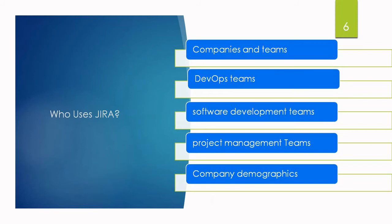DevOps teams are also using Jira. Breaking down silos and creating seamless collaboration between software development and IT teams is a difficult challenge for any organization. Combining both teams together to assign and push priorities is key. DevOps is a set of practices that automates processes between these two teams, promising benefits like team trust, faster software releases, ability to solve critical issues quickly, and improved management of unplanned work. Jira supports this culture through its tools and functionality.